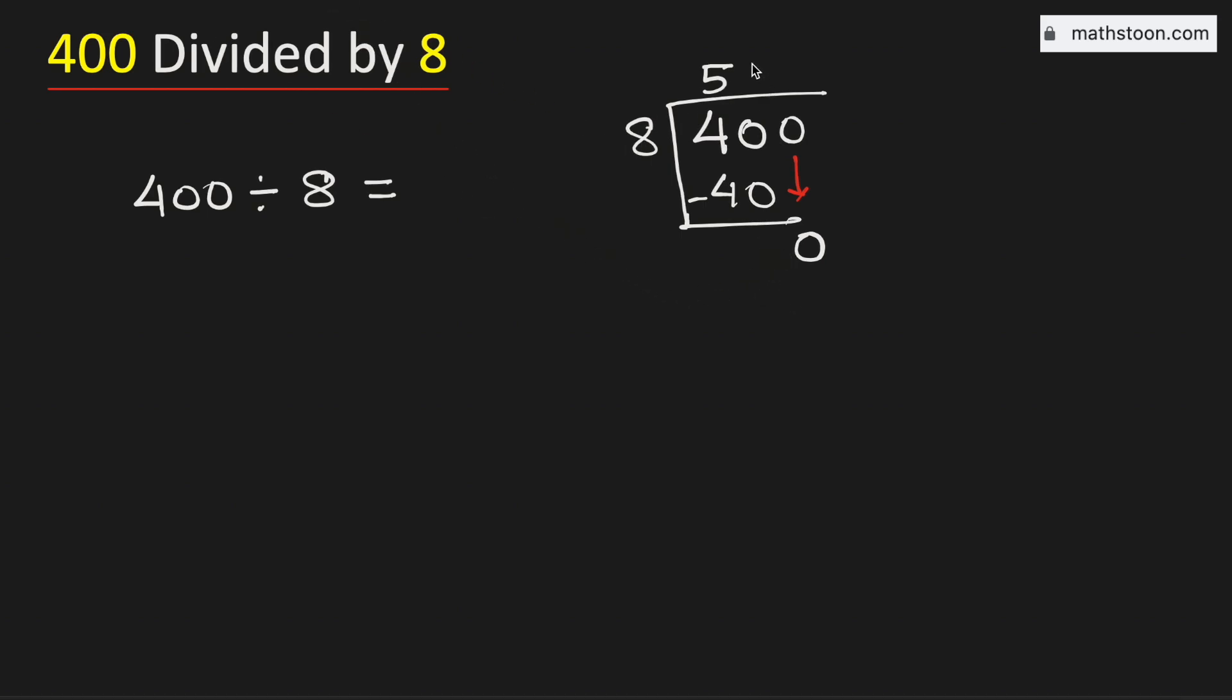Now we know that 8 times 0 is 0. Subtracting, we get 0. Now see that we have no number to bring down here. So we have the remainder 0, therefore we will stop.